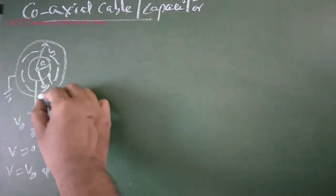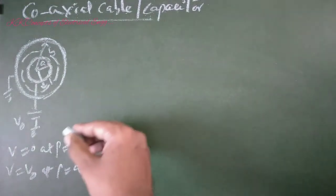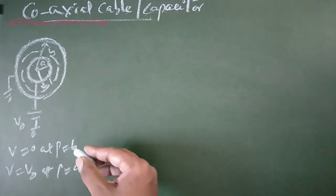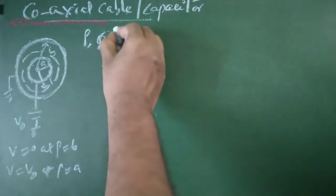Since this cable is a concentric cylinder, we will consider cylindrical coordinates: ρ, φ, and z.